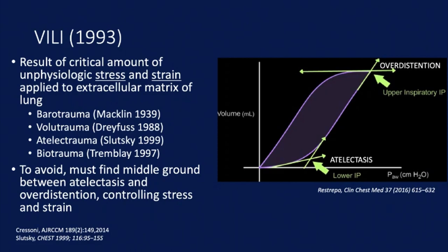I want to focus on the physiology underlying the disease, its management, and the rationale for using pleural pressure measurements to guide settings. The physiologic definition of ventilator-induced lung injury is a critical amount of unphysiologic stress and strain applied to the extracellular matrix of the lung. The term VILI was introduced in 1993, and biotrauma is probably just an important mechanical aspect — a lung that is injured in any of these ways can still produce pro-inflammatory cytokines that worsen the very lung injury we are trying to treat.